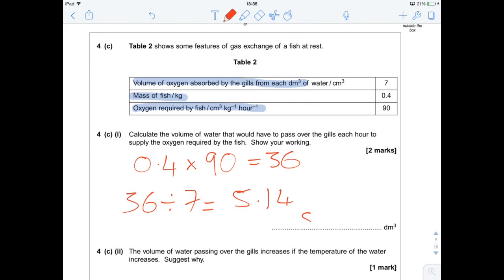And that is our answer, 5.14 decimetre cubed. It's a bit awkward, this question, because they give you the numbers not in the right order that you need to use them in. So work out how much oxygen that fish will require per hour for its size, and then take it from that.